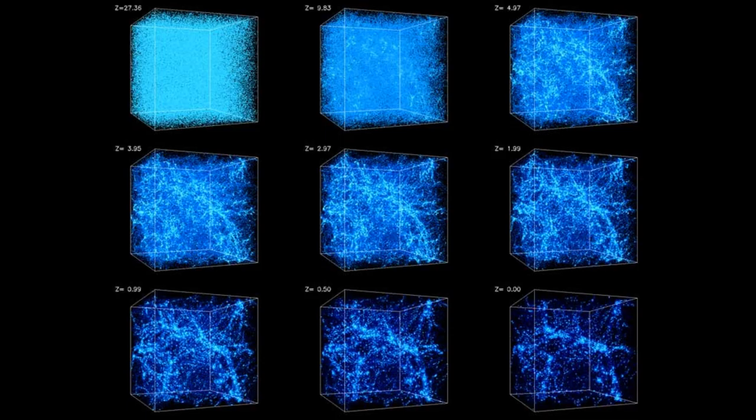The matter produced by the Big Bang was initially very uniformly distributed throughout space, but the distribution was not perfectly uniform, and the density of matter in some regions was slightly higher than the density in other regions. Gravity caused regions that had a higher density than average to expand slower than the regions that had a lower density than average. Thus, while the density in an overdense region decreased as the universe expanded, it decreased at a slower rate than the mean density of the universe decreased.